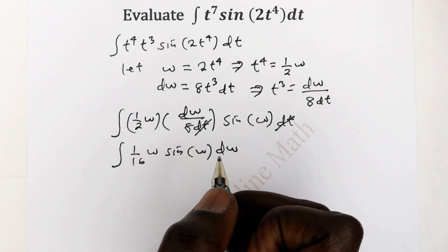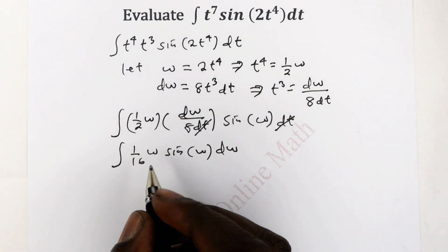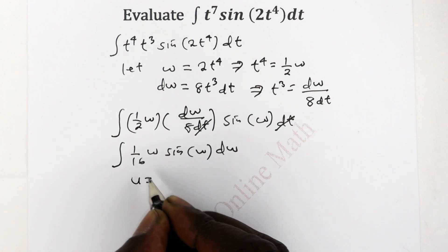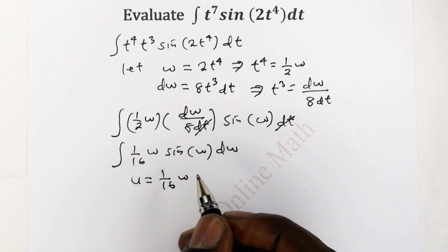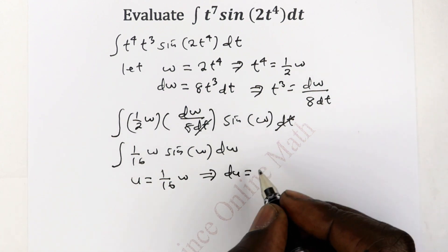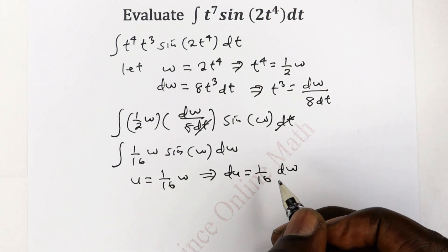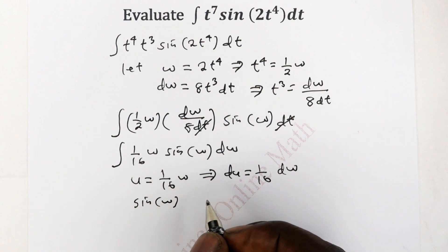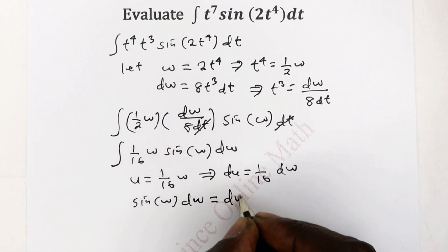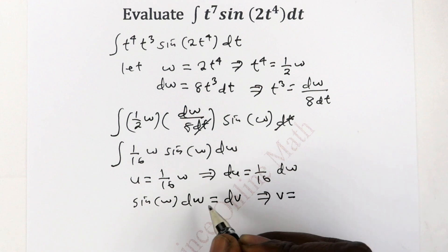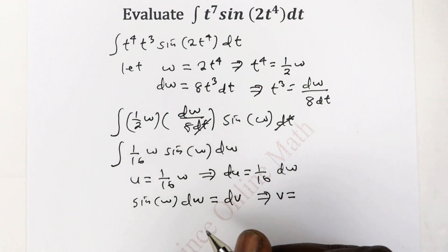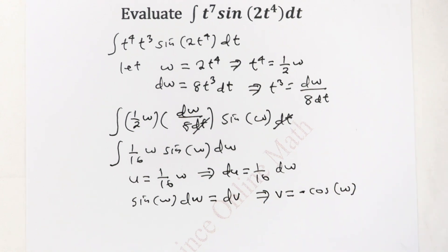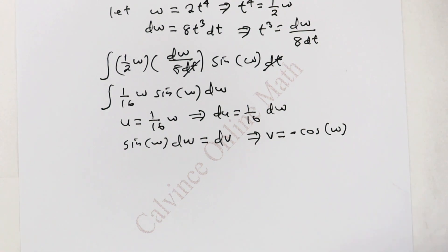We can now apply the integration by parts formula. We pick u and dv from the two terms. Let u = (1/16)w, so du = (1/16)dw. Then we take sine of w to be dv. Integrating sine of w gives v = negative cos of w.